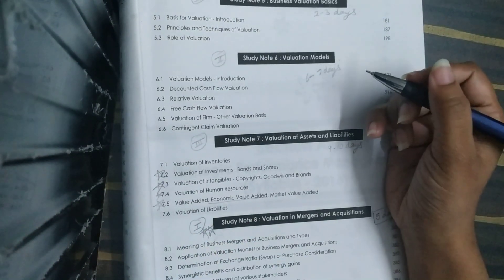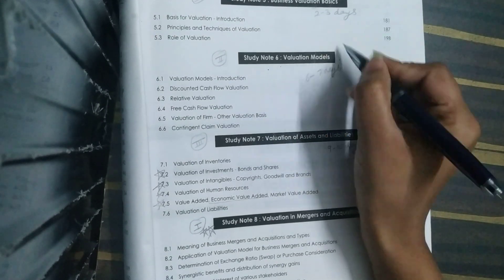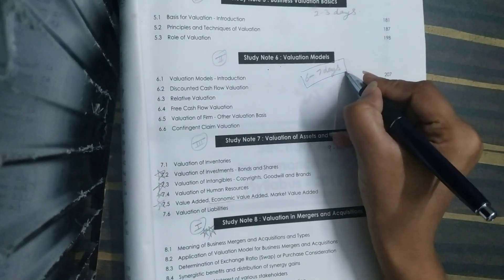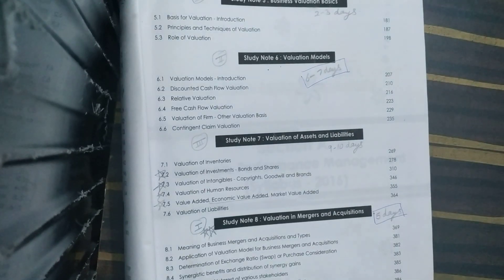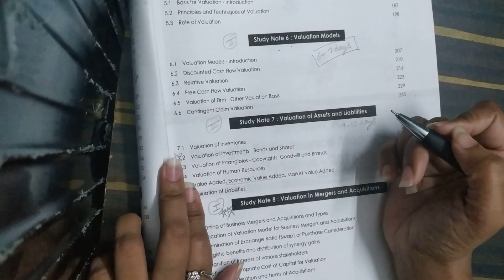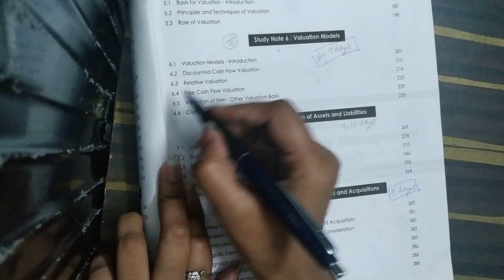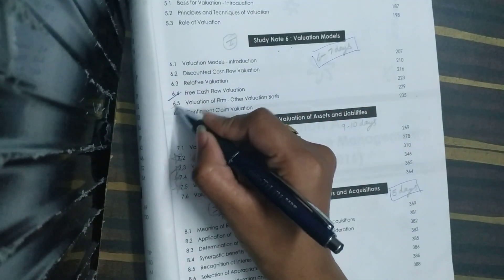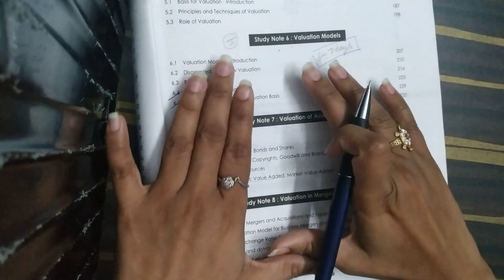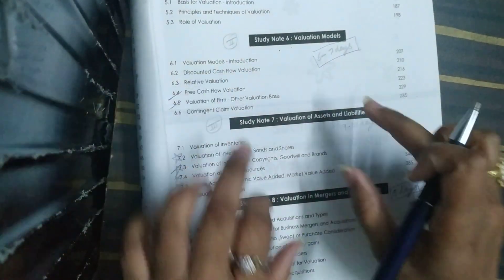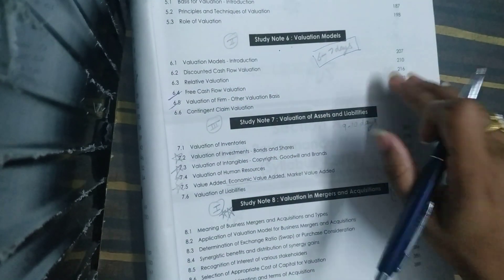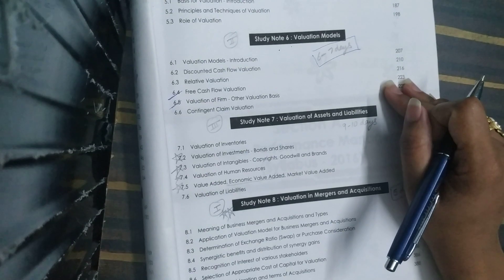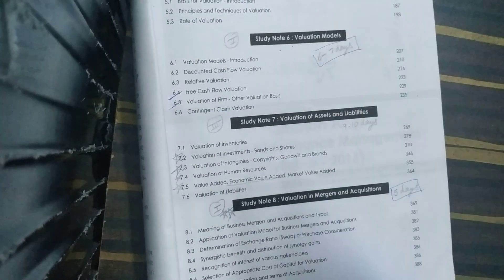If I look at the second weightage, Study Note 6, Valuation Models, which you can cover in 6 to 7 days easily. In this chapter, the main topics are cash flow related topics. The value of firm is very important. Don't forget it because the questions are good, the examiner asks this every time in exams, so please cover it all.